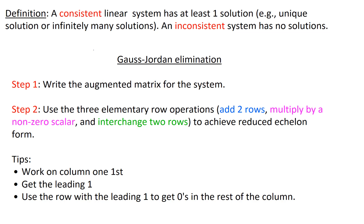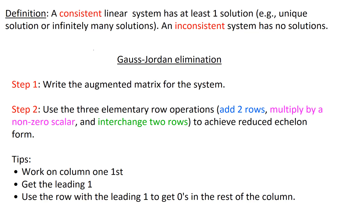Hello, in this video we want to look at some examples related to Gauss-Jordan elimination. First of all, let's look at a definition. A consistent linear system has at least one solution — for example, it has a unique solution or maybe infinitely many solutions. And an inconsistent system has no solutions.